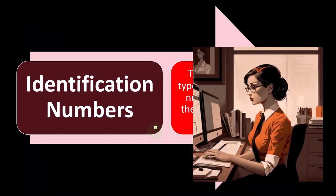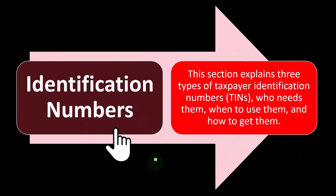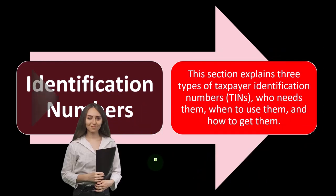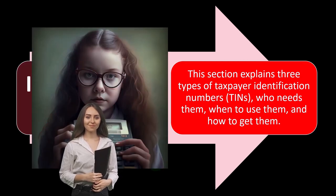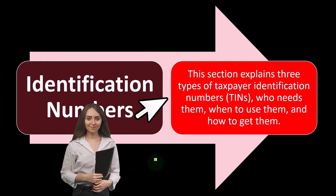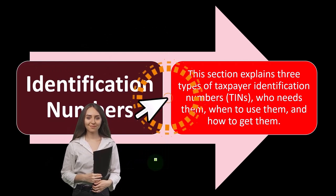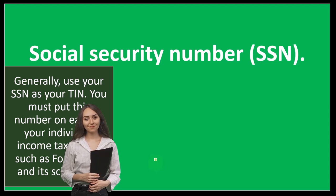Now, identification numbers. As we know, the IRS knows us not by name, but by numbers. So we need to have one of those. This section explains three types of taxpayer identification numbers — the TINs — who needs them, when to use them, and how to get them.